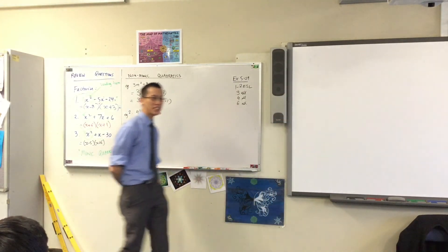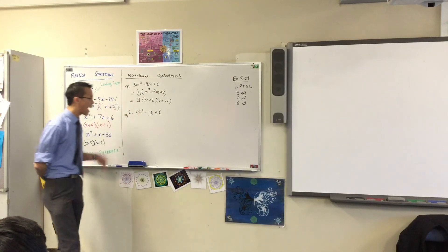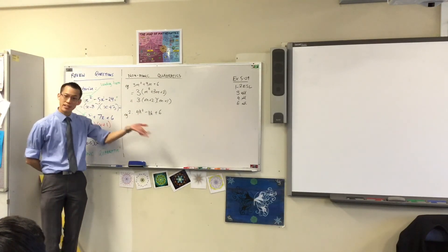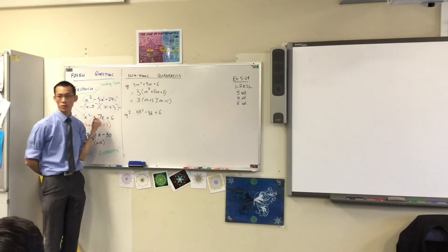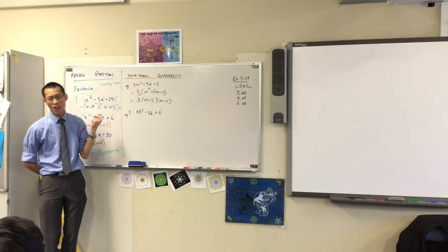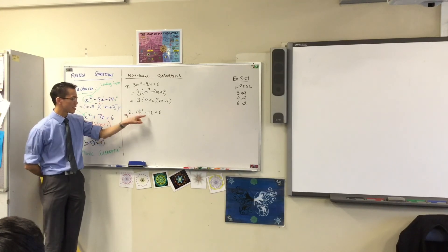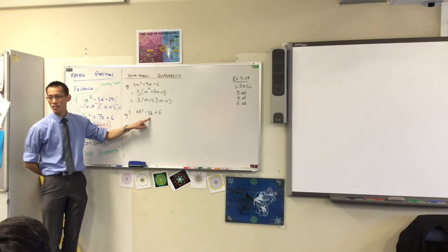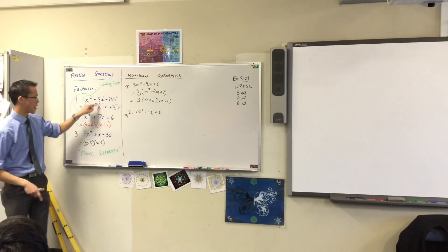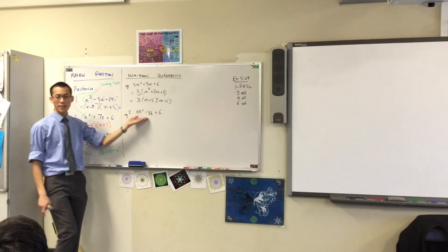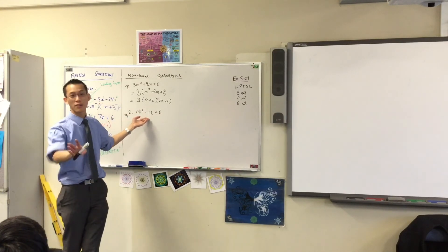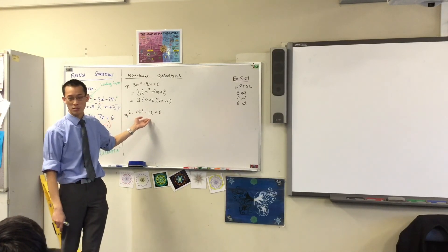The coefficients are 4, negative 11, and 6. Is there a single common factor I can pull out of all of them? No — mainly because of this middle number. It'll only divide through by 11 and 1, neither of which is any use to us.